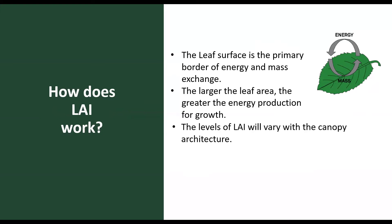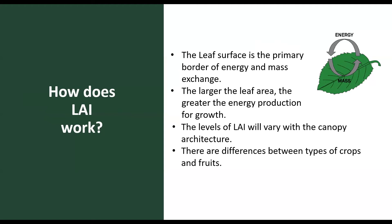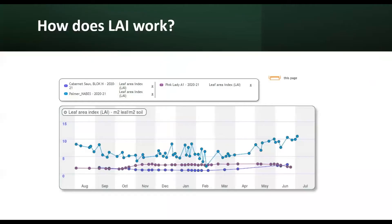The levels of LAI will also vary with the canopy architecture, which depends on the cultivars, geography and field culture practices. There are differences between types of crops and fruits. More is known about the optimum LAI for cereals than fruits. For example, LAI for apples can be between 1.5 and 5, oranges is high between 9 to 11, peaches can be 7 to 10, and mangoes can lie between 1.2 and 4.5.